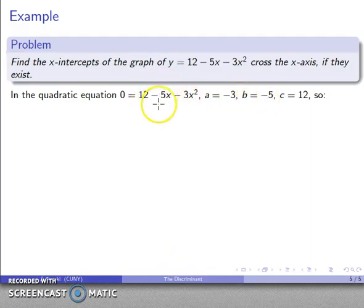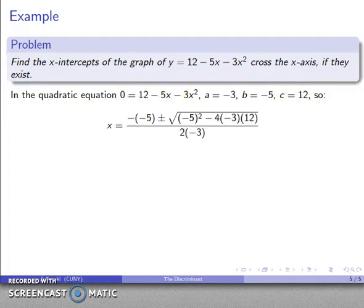b, coefficient of x, negative 5. c, constant, that's going to be 12. And so I can fill the quadratic formula in.